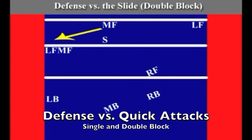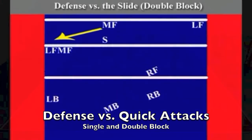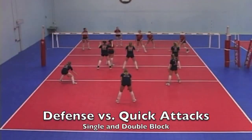When this happens, the left front blocker must shuffle along the net and try to stay ahead of the attacker while still facing the attacker. We use the shuffle step on this approach since the left front blocker must be able to jump at any point along the net. The back row defenders must hold their positions and turn to face the attacker. The left front blocker must try to get outside to the line and then press back inside to block, since most slide sets are attacked cross court rather than down the line.